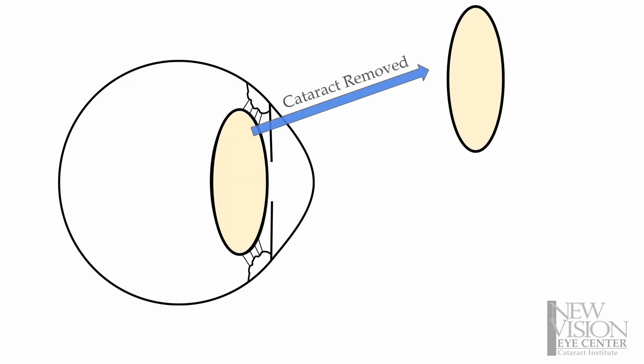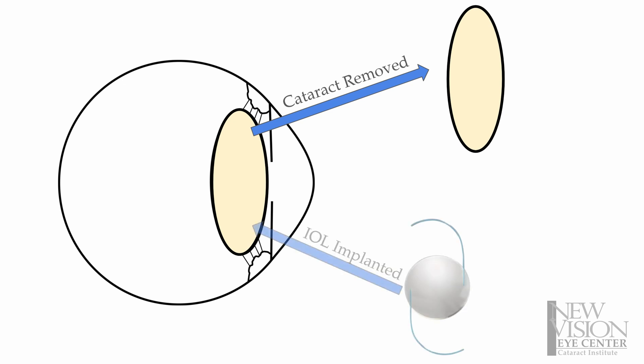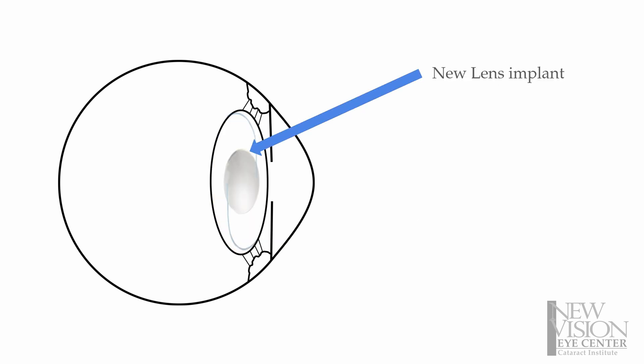When we actually do your surgery, what we're doing is removing the cataract and then replacing that with a nice new clear lens implant. At the end, it looks something like this.